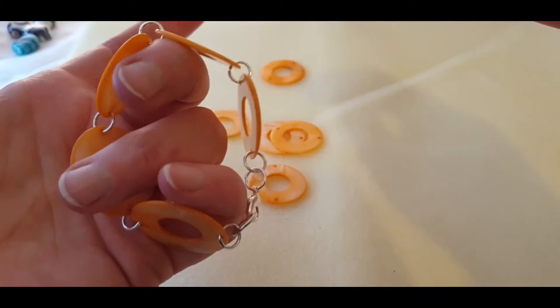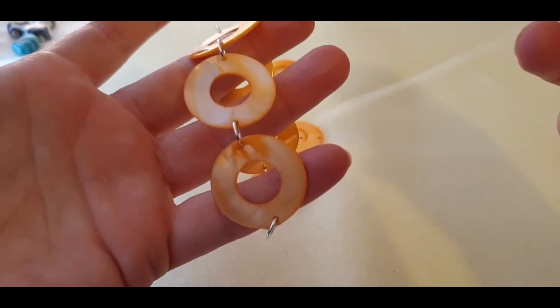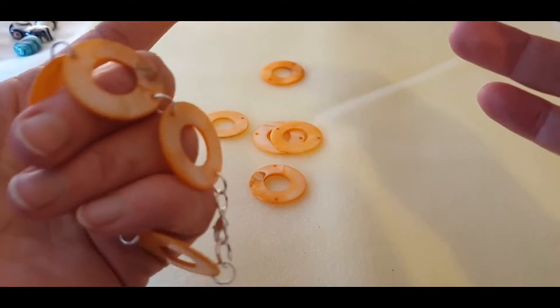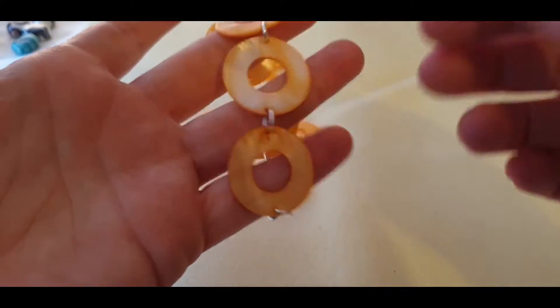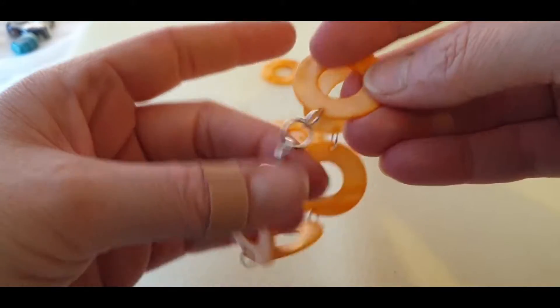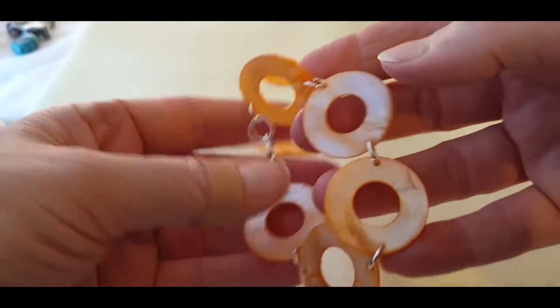Very pretty, very simple, just using the shells and jump rings and a clasp and you've made yourself a bracelet. So once you know how to open a jump ring and add these findings on, you can make anything. So that's that one.